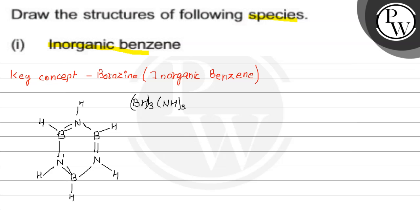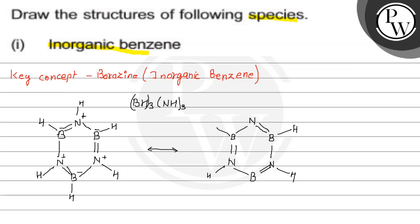Nitrogen carries the positive charge and boron carries the negative charge. This is nitrogen positive and boron negative. The resonating structure of this is: one side boron is double bonded with nitrogen, and these borons are double bonded with nitrogen — nitrogen single bond boron double bond nitrogen boron.